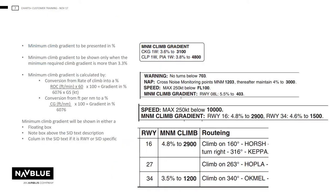NAVBLU will present minimum climb gradients only if the minimum climb gradient is more than 3.3 percent. It can be shown either in the SID text description, in a note box, or in a floating box.